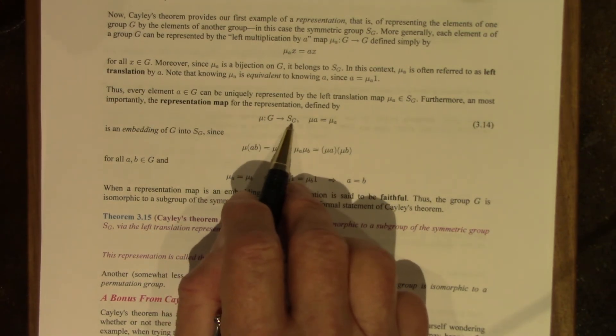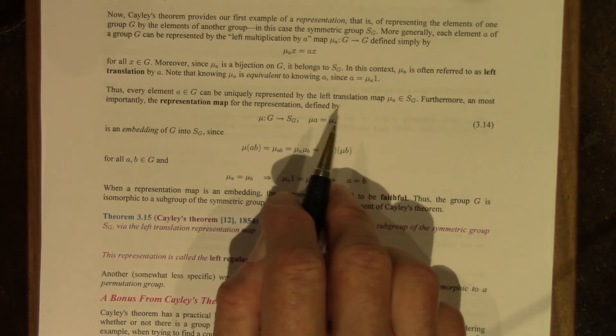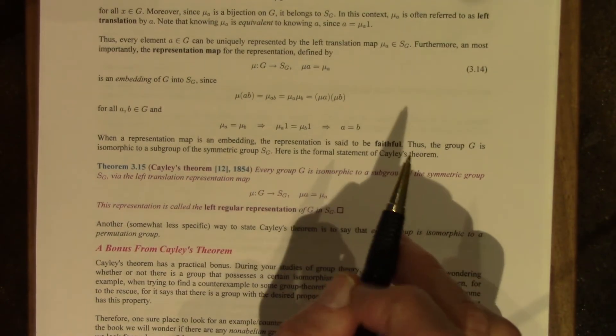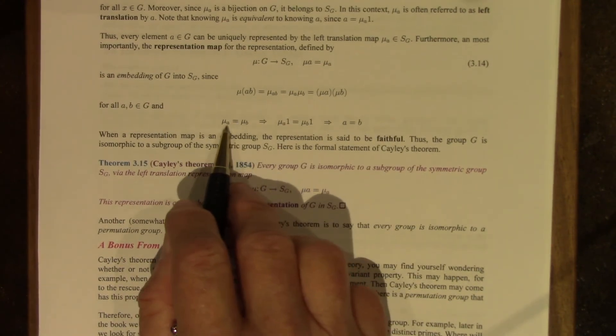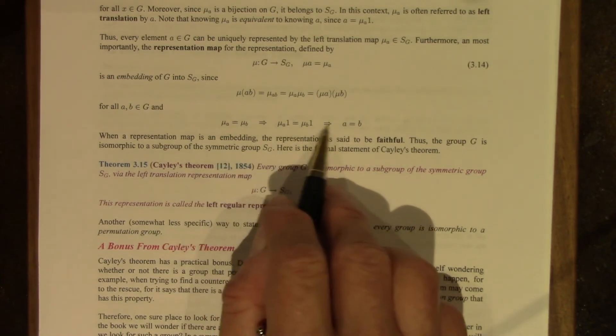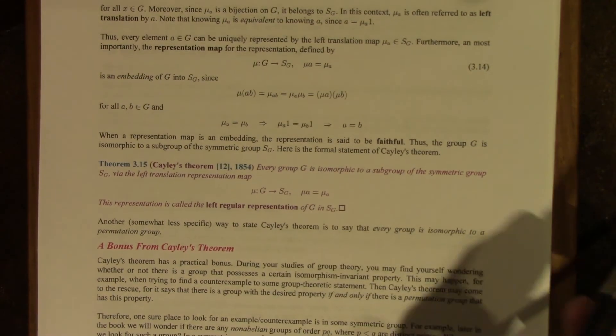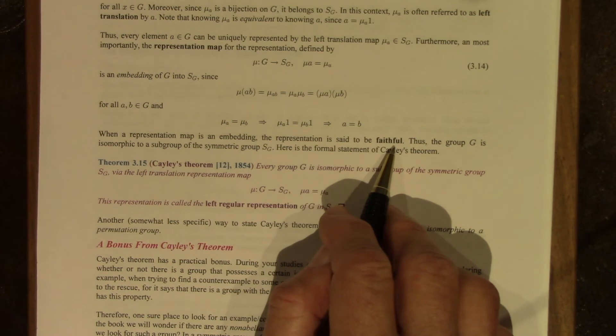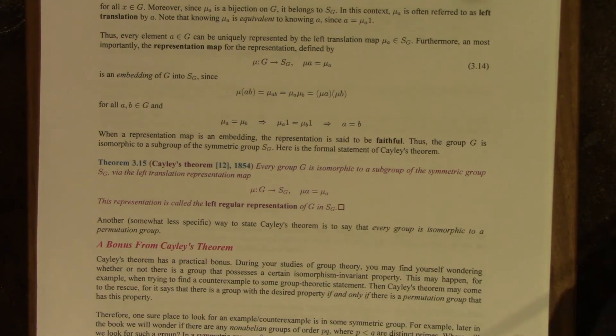I also mentioned that knowing mu sub A is equivalent to knowing A. You can go back and forth between the two. So this is a faithful representation. So every element, little a in a group, any group, can be uniquely represented by a left translation map. The representation map looks like this. It maps G to the symmetric group on G. It takes little a to mu sub A. It's an embedding. Here is the reason: mu sub A equals mu sub B implies A equals B. So we get a faithful representation. Every element of G is faithfully represented by a permutation. Different elements of G are represented by different permutations. And this gives us, this embedding tells us that the group G has an isomorphic copy, an exact copy, within the symmetric group S sub G.